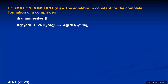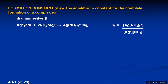The equilibrium constant expression for this reaction would be products over reactants, and that ratio of the molarity of the products to the reactants equals an equilibrium constant called the formation constant or K sub f. That would be the concentration of the complex ion divided by the concentrations of the metal ion and the ligands multiplied together.